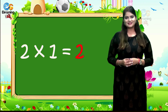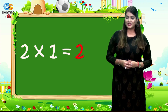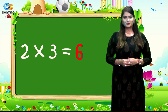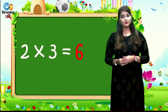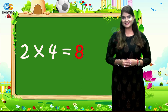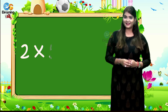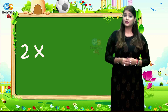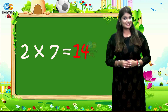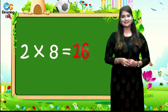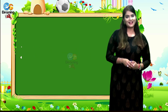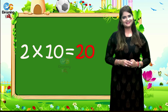2 1s are 2, 2 2s are 4, 2 3s are 6, 2 4s are 8, 2 5s are 10, 2 6s are 12, 2 7s are 14, 2 8s are 16, 2 9s are 18, 2 10s are 20, 2 1s are 2.